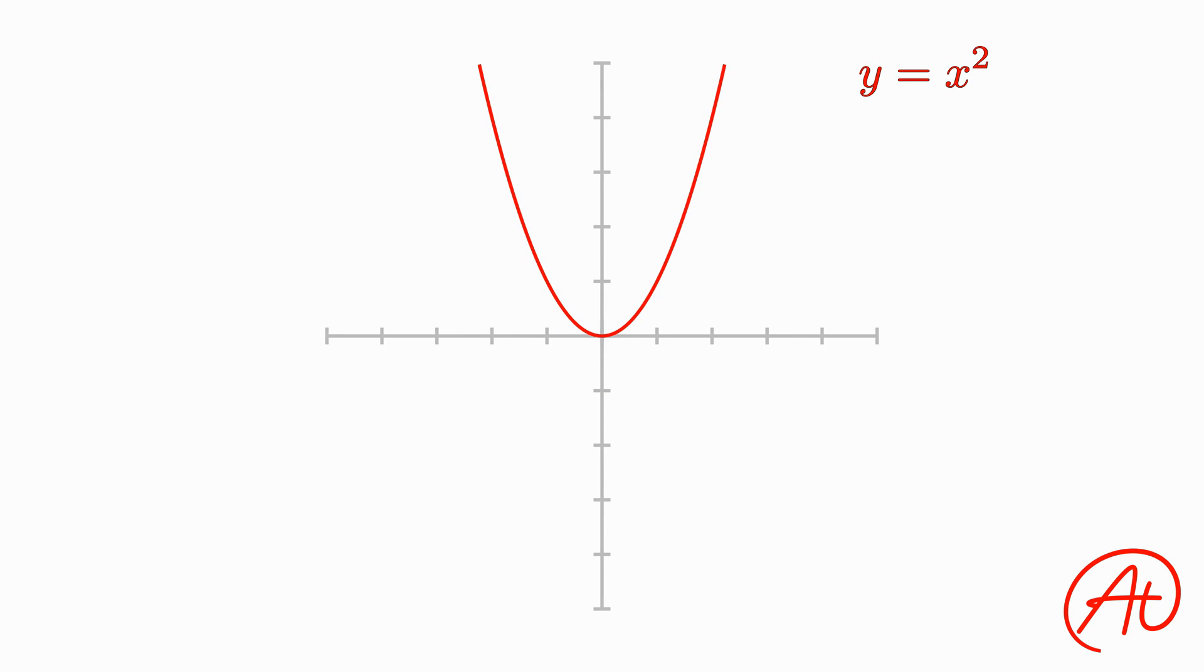But what happens when we have a graph like this? What do we do now? With a curve like this, what does it even mean to find its derivative, or again, the slope at any point?